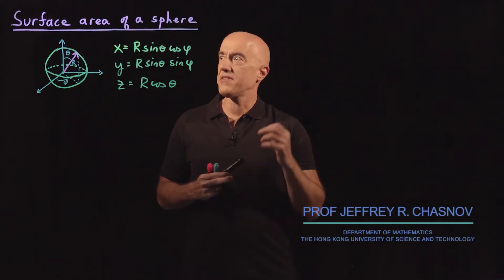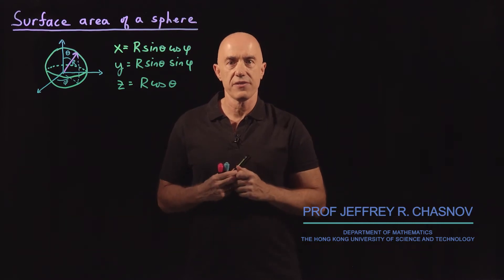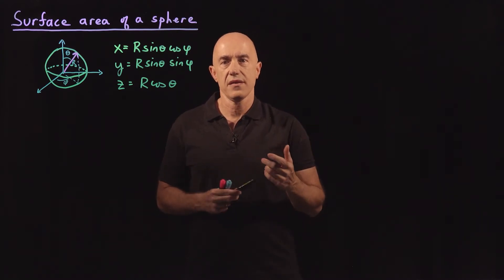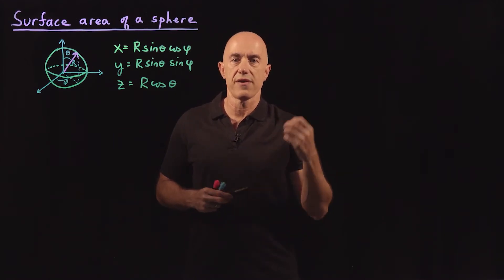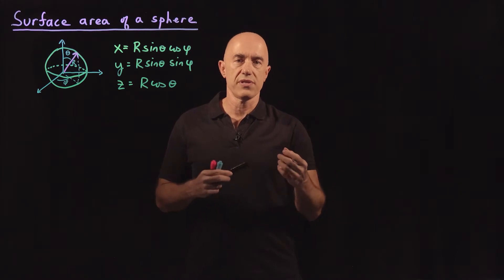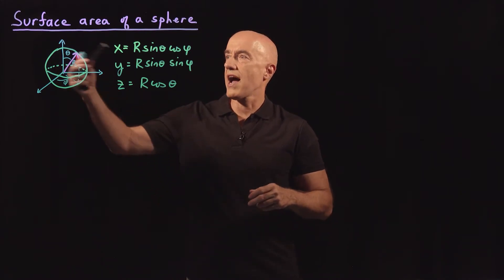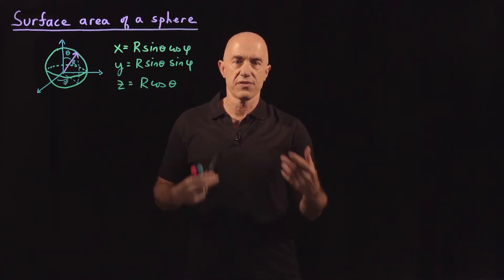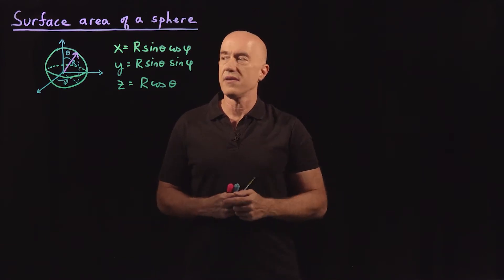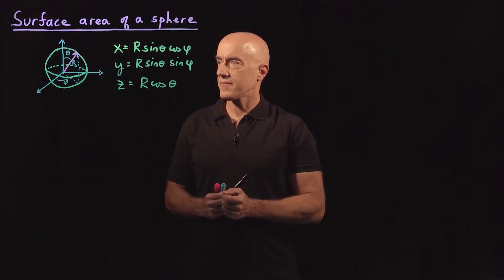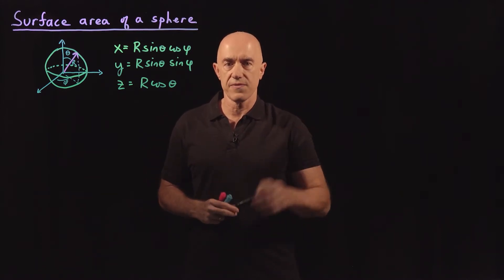In the last video, I defined the surface integral of a scalar field. If the scalar field is just one, then the surface integral gives us the area of the surface. So I want to use the machinery of surface integrals to derive the surface area of a sphere. We all know it's 4πR², where R is the radius of the sphere. So we're going to parameterize the sphere using spherical coordinates.